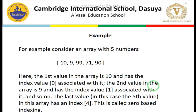For example, this is a one-dimensional array. The index value of 10 is given here — it is the first element and its index value is 0. That's why this is also called zero-based indexing, because the system starts the index value from 0. And the index value of 90 is 4.